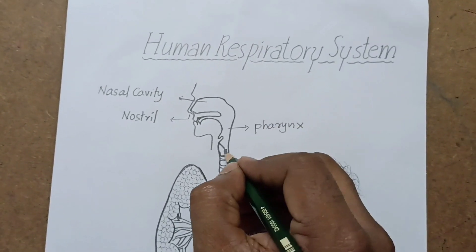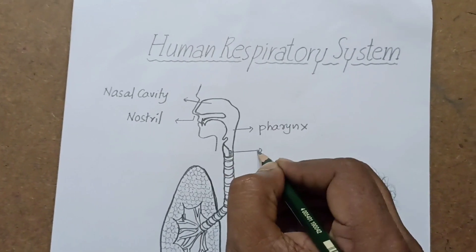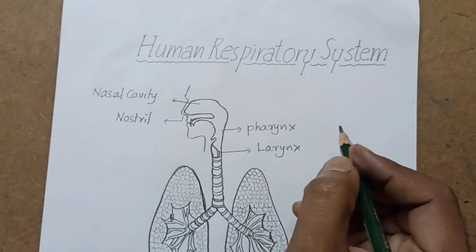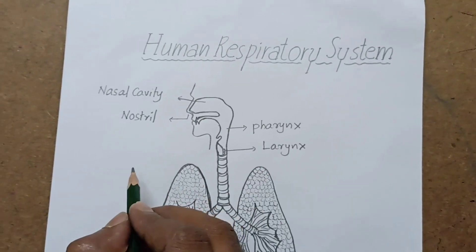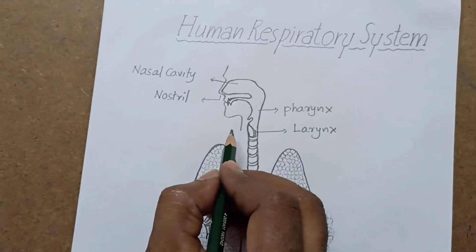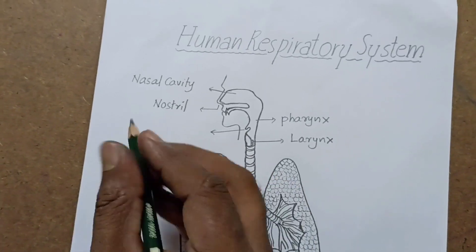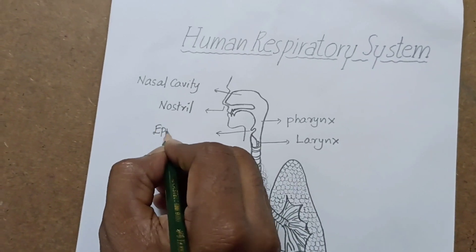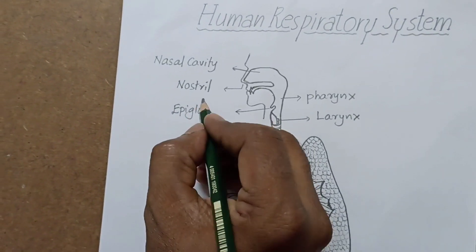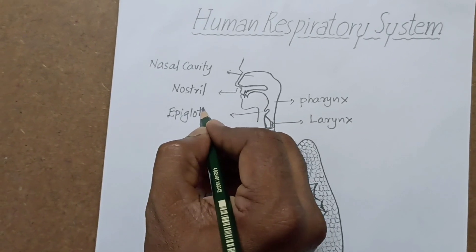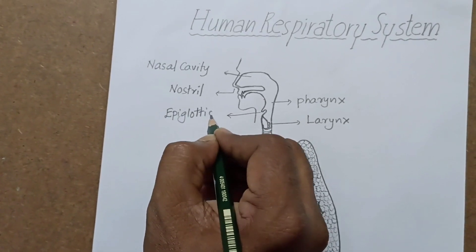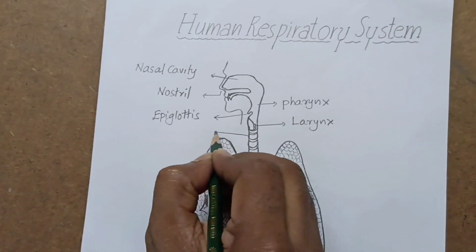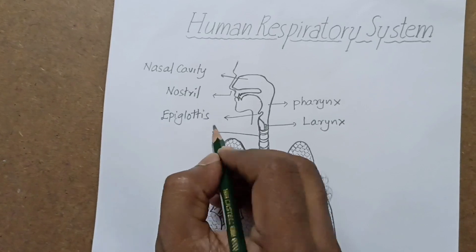This is the pharynx. This is the larynx. Now the epiglottis. This long tube is known as the trachea.